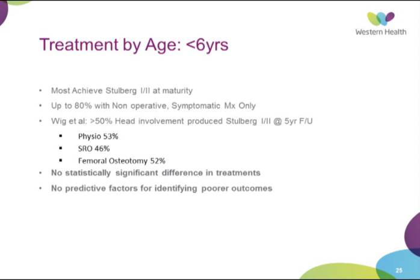For the exam, treatment should be based primarily on age. If a child is less than six, counsel that most do very well — up to 80% achieve Stulberg grade one or two at maturity with non-operative and symptomatic management only. A recent study showed that even with greater than 50% head involvement, they still achieve Stulberg grade one or two at five-year follow-up, with no statistical difference between physiotherapy, Scottish Rite orthosis, or femoral osteotomy — all approximately 50% effective.